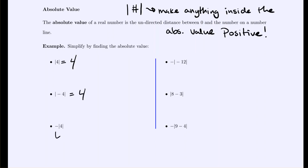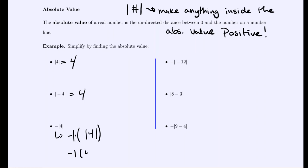In the next statement we have negative times the absolute value of 4. First find the absolute value of 4, then apply the negative symbol. That negative is the same as multiplying by negative 1. The absolute value of 4 is positive 4, then multiplying by negative 1 gives us negative 4.